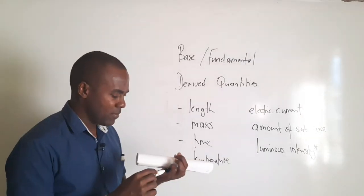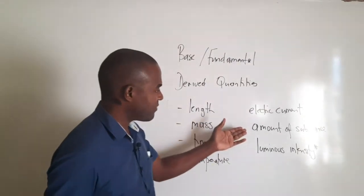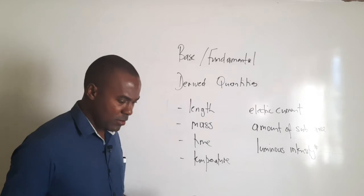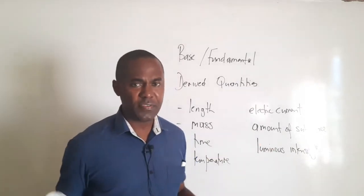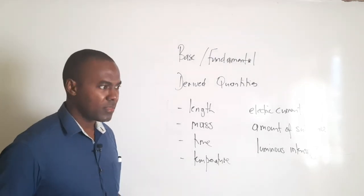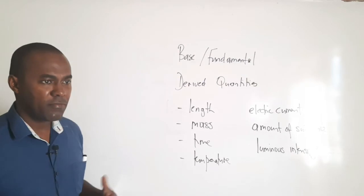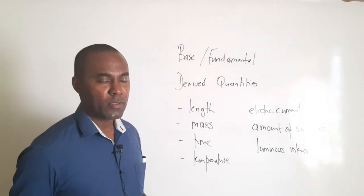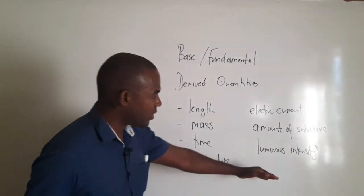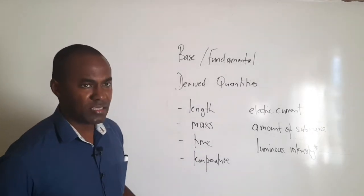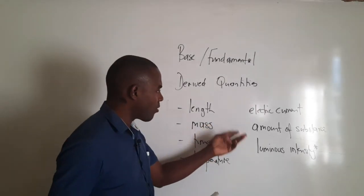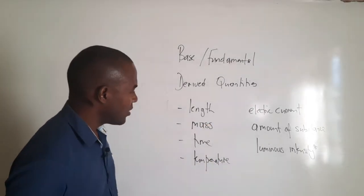What does it mean to be a fundamental quantity? It basically means these seven quantities are the foundation — the building blocks — of all other physical quantities. Every physical quantity you can think of — speed, area, volume, pressure — these are physical quantities not included in the list of seven, and therefore they are not base or fundamental quantities. However, they can be expressed as a combination of one or more of these seven fundamental quantities.